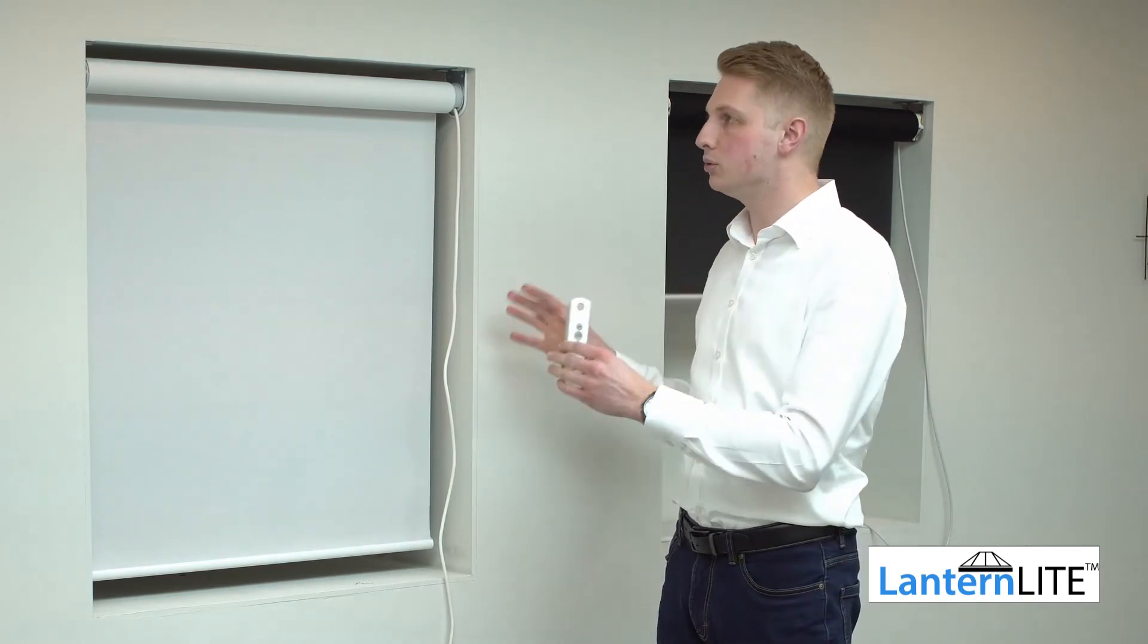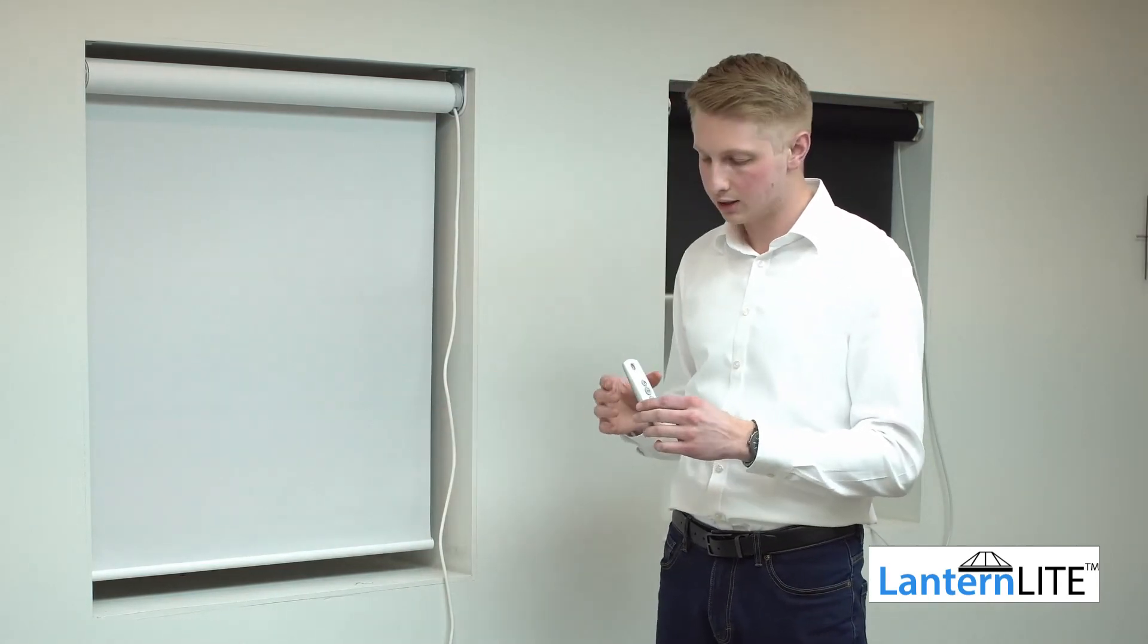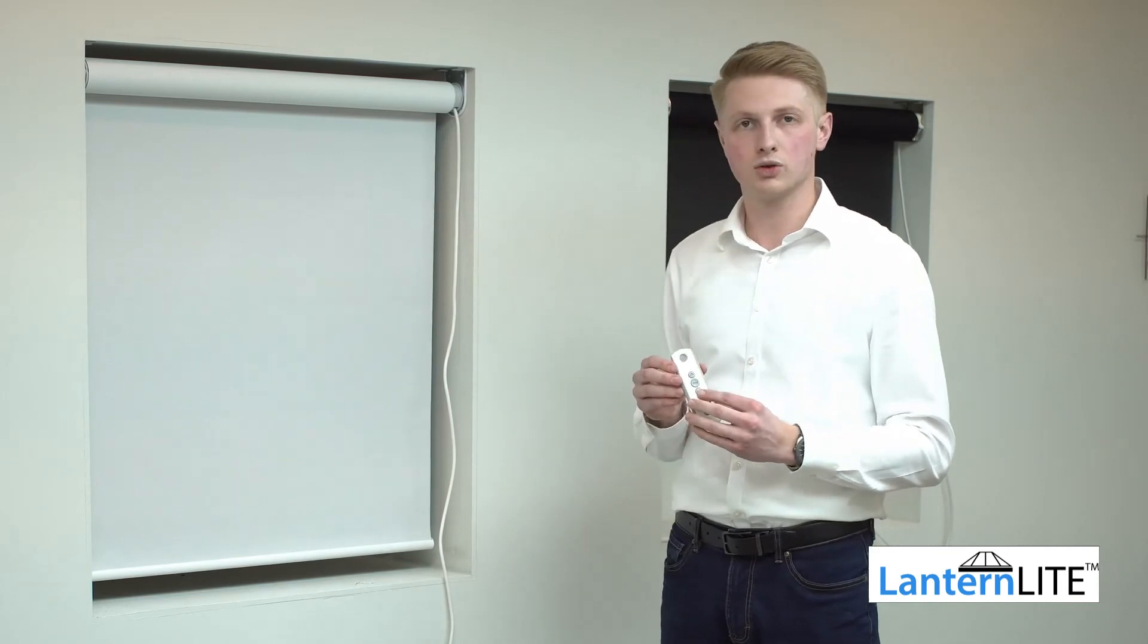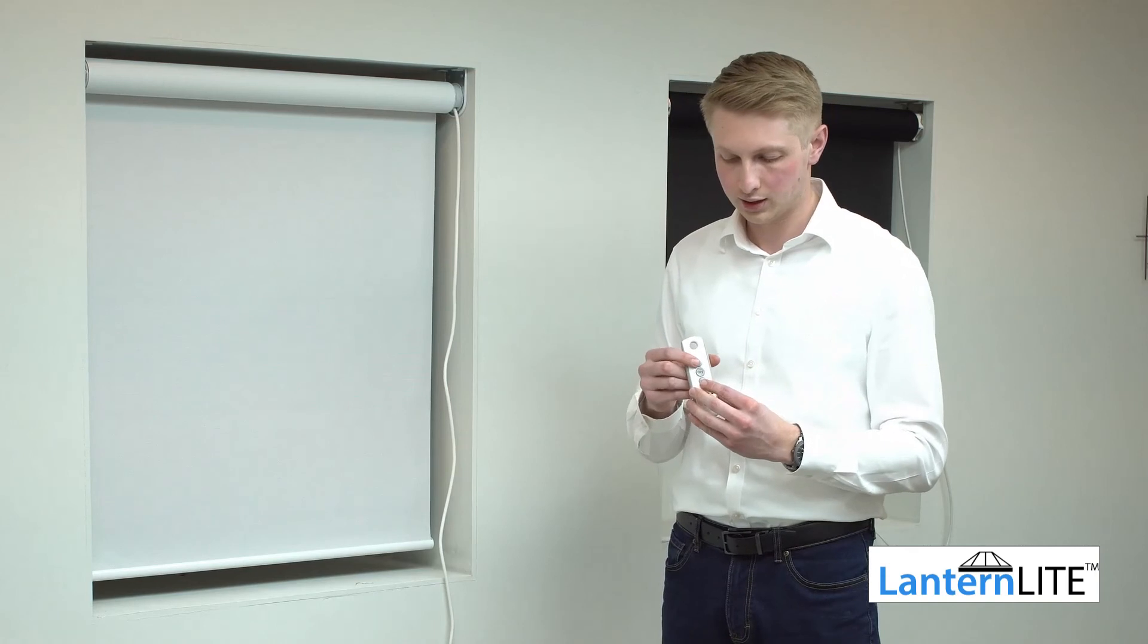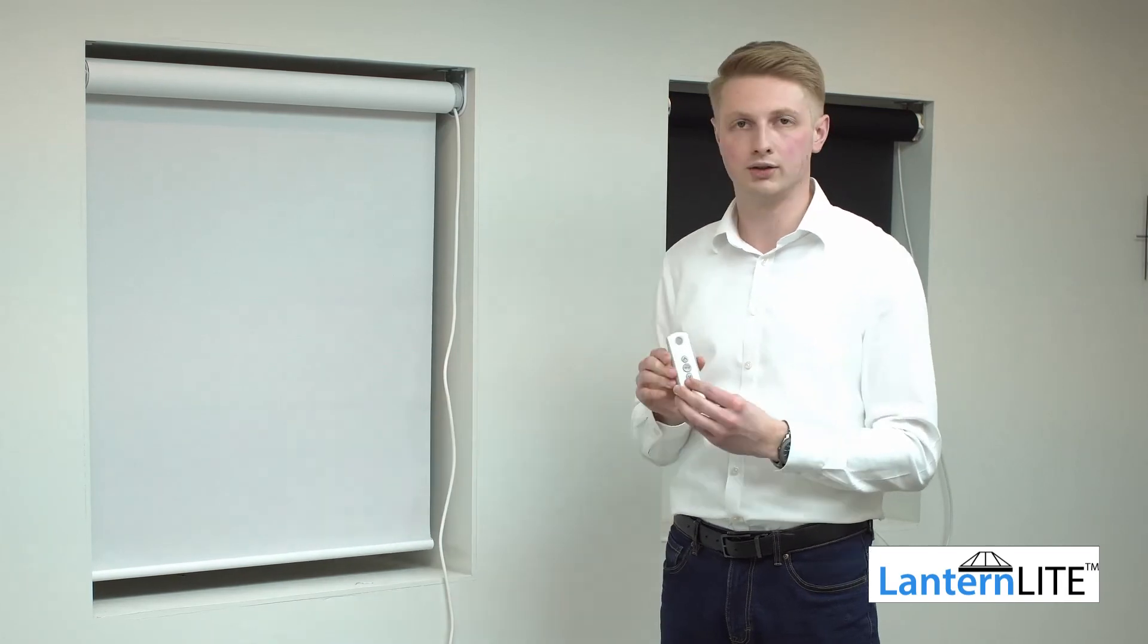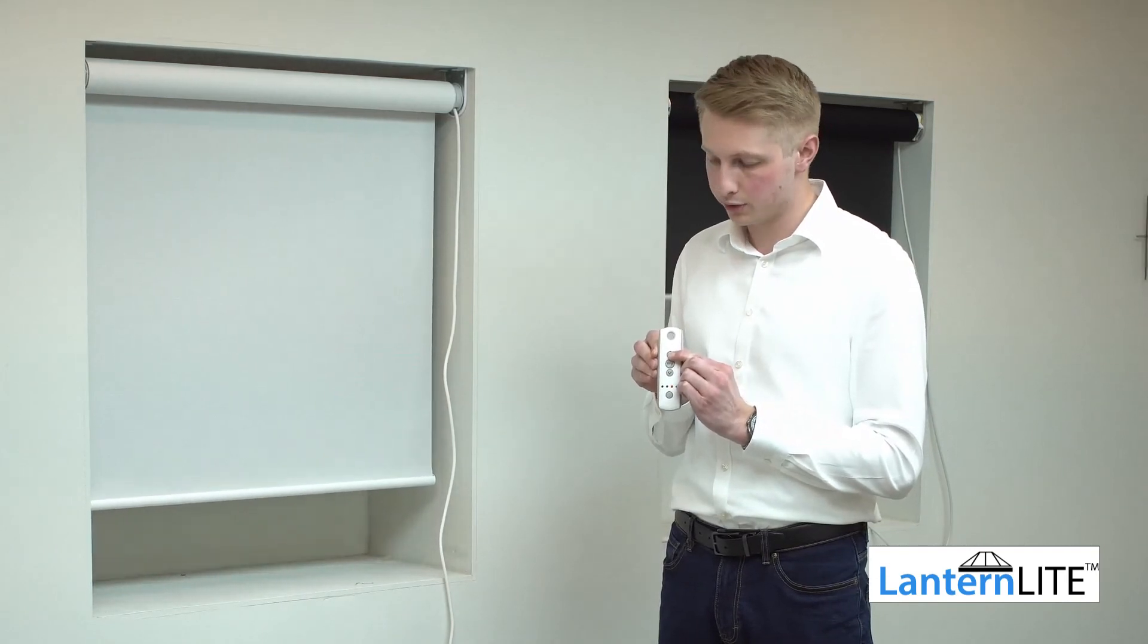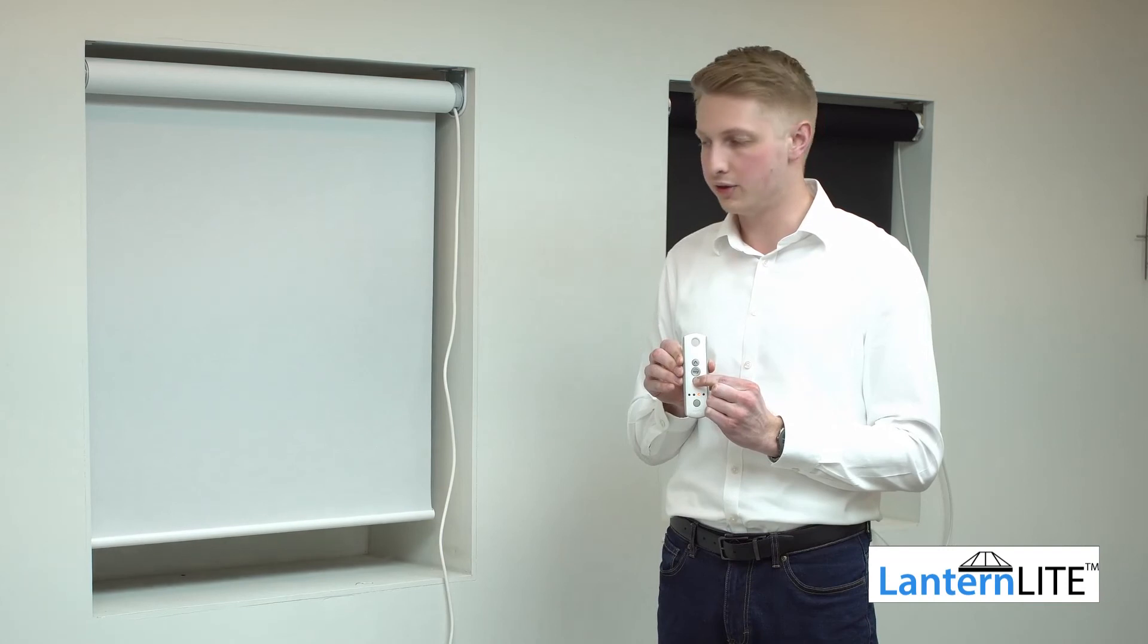Now if you did that procedure because you made a mistake or because you wanted to change both limits, then you could go straight back into repairing your remote control with your blind. And you do that exactly as we did at the start by pressing and holding the up and the down buttons and the blind does a shunt. This remote control is now re-paired with that motor. And as you can see, it's in programming mode. When I press and hold either the up or the down button, it travels.